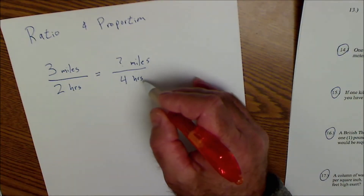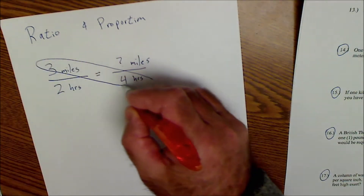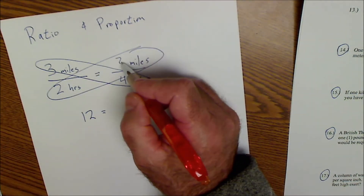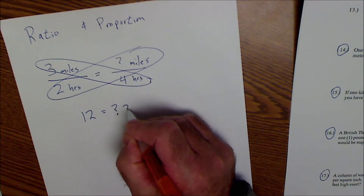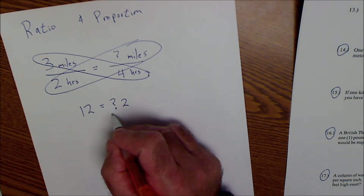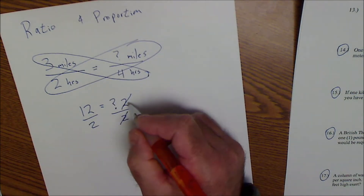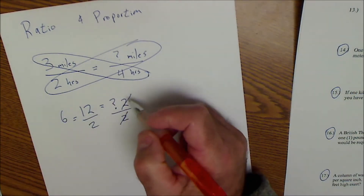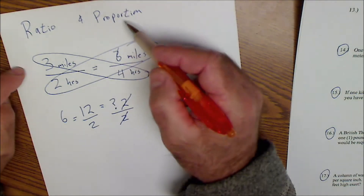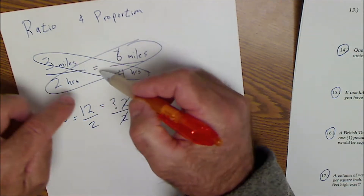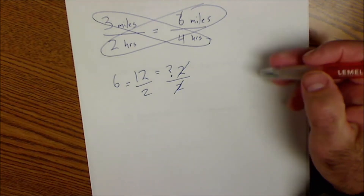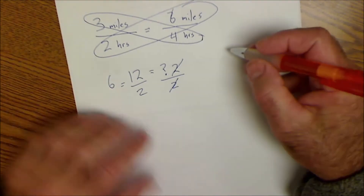There are a lot of ways to solve a proportion, one of which is cross-multiplying. You take the upper left and the lower right and multiply those together to get 12, then set that equal to the other two things multiplied: question mark times two. To get that unknown by itself, I divide both sides by two — those cancel — and I have 12 over 2, which is 6. So if I go 3 miles in 2 hours, I go 6 miles in 4 hours. A proportion is one ratio equal to another ratio, solved by cross-multiplying.